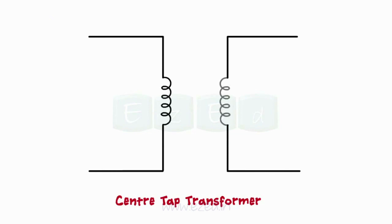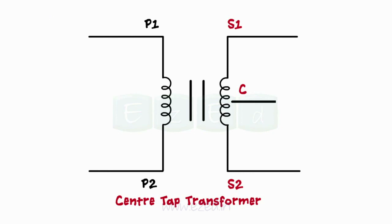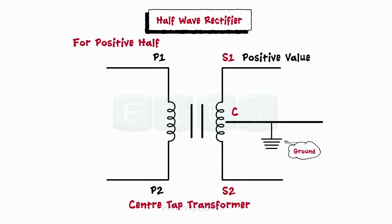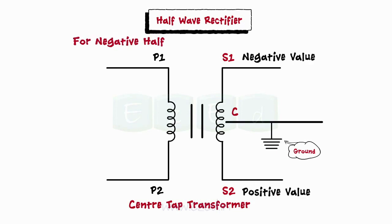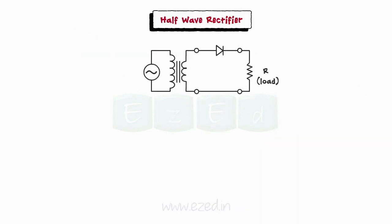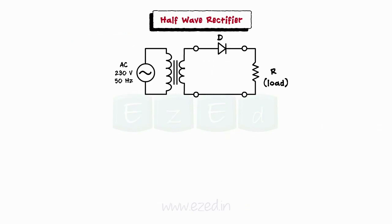In a full-wave rectifier, we use the center tap transformer. This transformer has three terminals: S1, S2, and C. Two are secondary terminals and the third, C, is taken from exactly the center of the secondary windings — hence the name center tap transformer. The central terminal C is always connected to ground. During the positive half, S1 has a positive value and S2 has a negative value, and vice versa during the negative half. The full-wave rectifier uses two diodes instead of one.